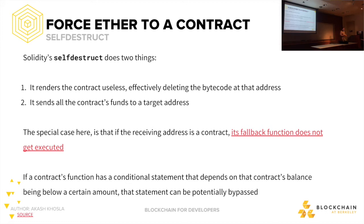Another attack is forcing ether into a contract using Solidity's self-destruct function. Self-destruct is the only way to destroy a contract on Ethereum — it renders the contract useless, deletes the bytecode at that address, and sends all funds to a target address. There's a special case: if the receiving address is a contract, the fallback function does not get executed. So if there's a conditional statement that depends on the contract balance being below a certain amount, this can potentially be bypassed.